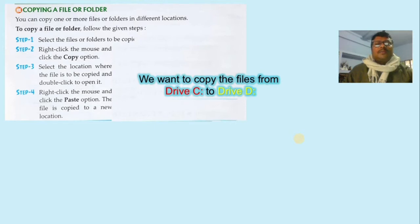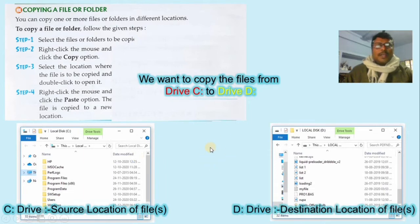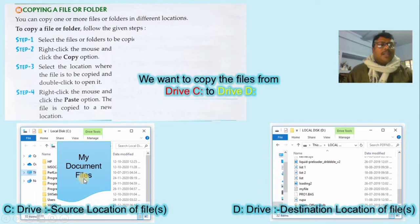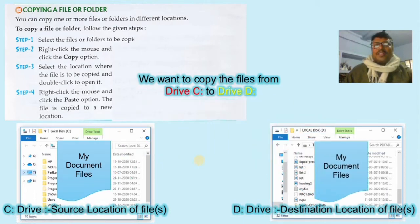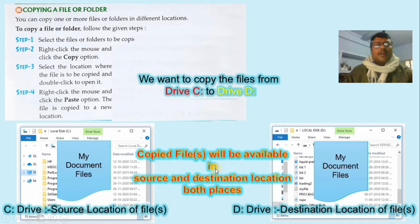Suppose we want to copy a file from C drive to D drive. C drive is the source location and D drive is the destination location. When we copy the file — for example, 'My Document' — it will be pasted at the D drive. After pasting, the file will be available at both locations: the source location and the destination location. So copied files are available in both source and destination.